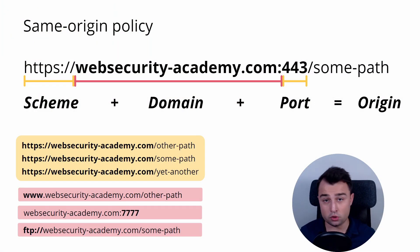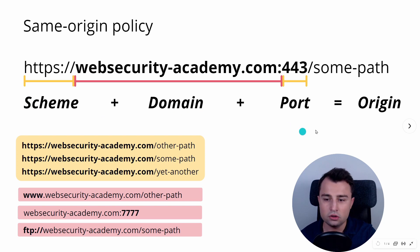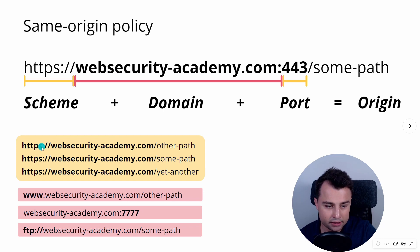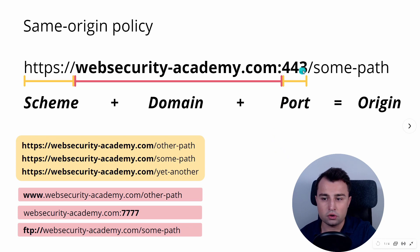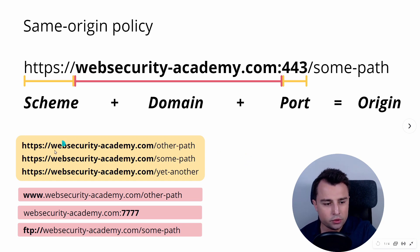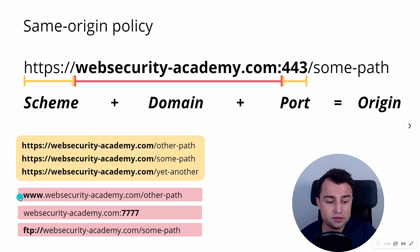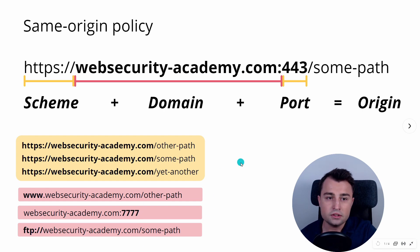In order to understand same origin policy, let's first understand the concept of origin. When you take the triple of scheme, domain, and port, this is what constitutes an origin. For example, with HTTPS and the domain Web Security Academy, the port is implicit because the default port for HTTPS is 443, and the default port for HTTP is 80. So when you have the same scheme, the same domain, and the same port, regardless of the path, it is considered the same origin. If you have a different subdomain, a different port, or a different scheme, these are all different origins.